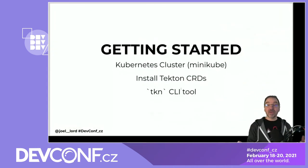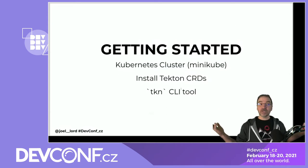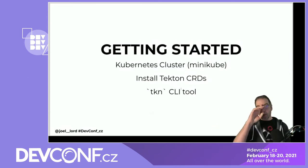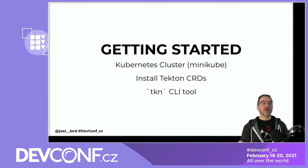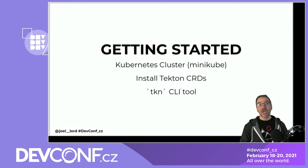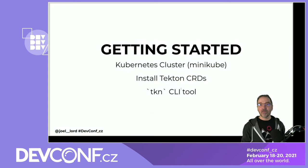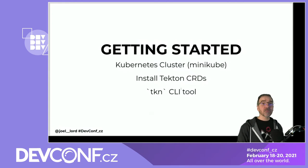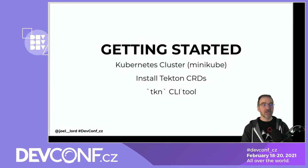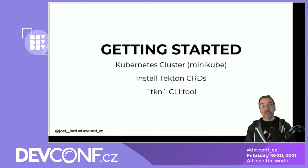Getting started with Tekton: the first thing you'll need is some kind of Kubernetes cluster. If you have OpenShift, that's great. There is an operator called OpenShift Pipelines which is built on top of Tekton — kind of like OpenShift is built on top of Kubernetes — giving you Tekton on steroids. For this presentation, I'm going to use Minikube.